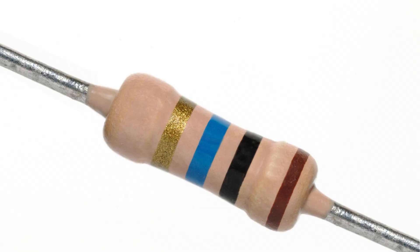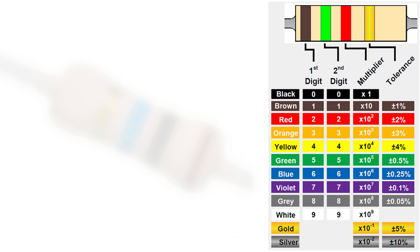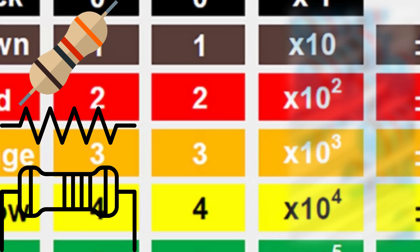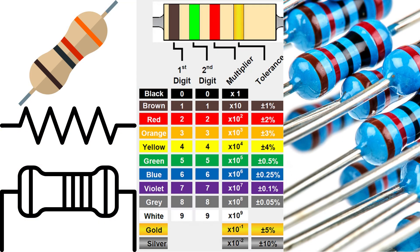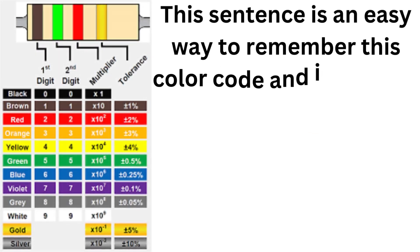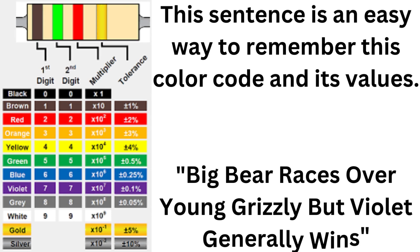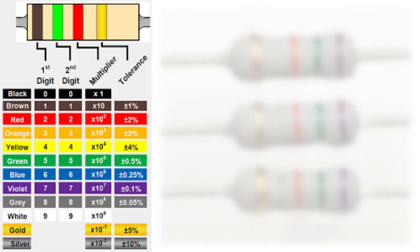Resistors have four colored bands. The first two tell you the digits of the resistance value. The common colors and their values are: black=0, brown=1, red=2, orange=3, yellow=4, green=5, blue=6, violet=7, gray=8, white=9. An easy mnemonic to remember this color code is: 'Big bear races over young grizzly, but violet generally wins.' Each letter of each word corresponds to the first letter of a color, and the relative position of the word in the sentence is its value.